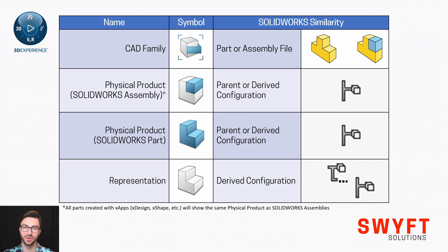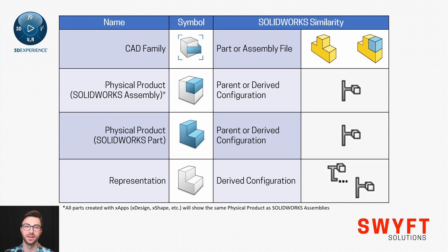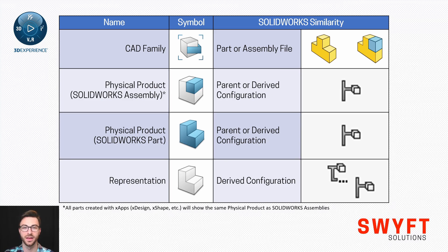Looking at this table, it draws a parallel for those who have used SOLIDWORKS. The closest thing to a CAD family would be the part or assembly file itself. The closest thing to a physical product for a SOLIDWORKS assembly would be a parent or derived configuration for that part or assembly, and the same goes for a SOLIDWORKS part. The only difference you'll notice when using 3DEXPERIENCE SOLIDWORKS is that the symbol for that part and assembly for your physical product will be a little bit different.